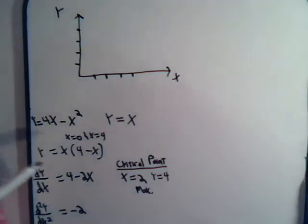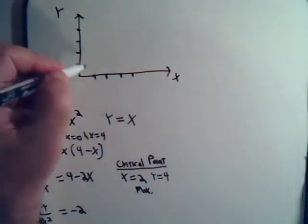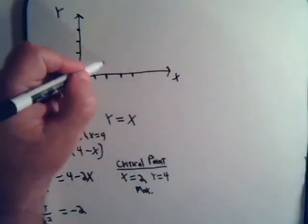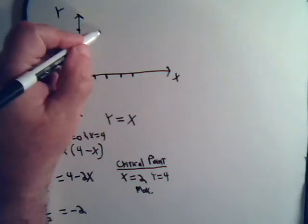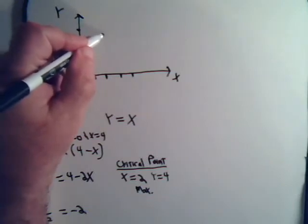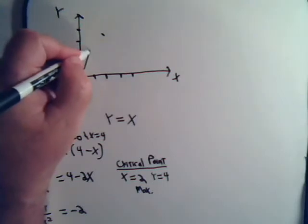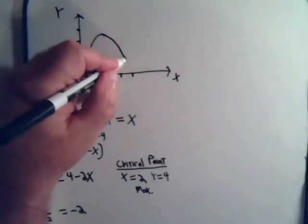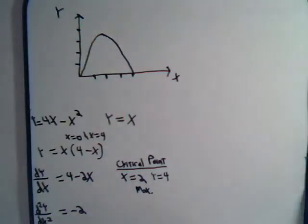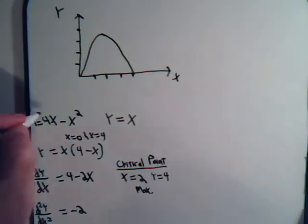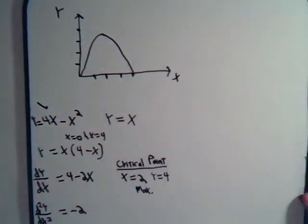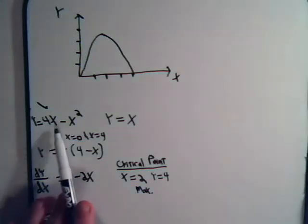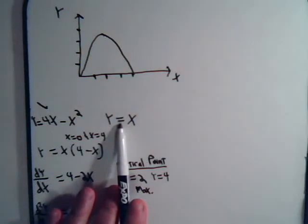And it has a maximum point when x equals 2, and y is 4. It's going to look something like this. So there, you can actually sketch that out without too much problem. And now for the line y equals x, what would be the point of intersection between this curve and this straight line?